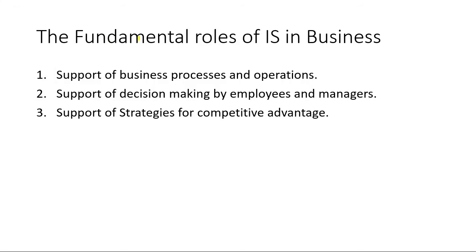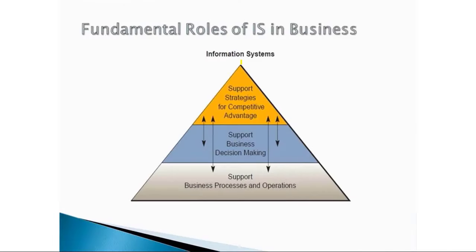Next, we're going to discuss the fundamental roles of IS in business — why IS is important. The first point is that IS supports business processes and operations. Second, IS supports decision making by employees and managers. And lastly, IS supports strategies for competitive advantage. Looking at the different levels of management in an organization: at the top level, IS supports the CEO, COO, and top-level management for competitive advantage. At the middle management level, IS supports business decision making. And at the operational level, IS supports business processes and operations.